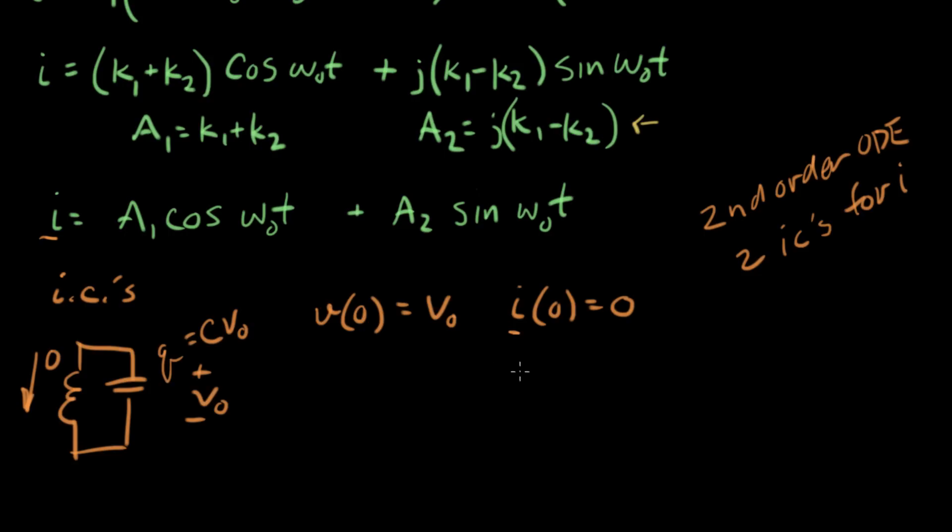We have one initial condition right here, and what we'd like to know is what is dI/dt at time equals zero. The other piece of information we have is this V-naught at time equals zero. So let's use that.